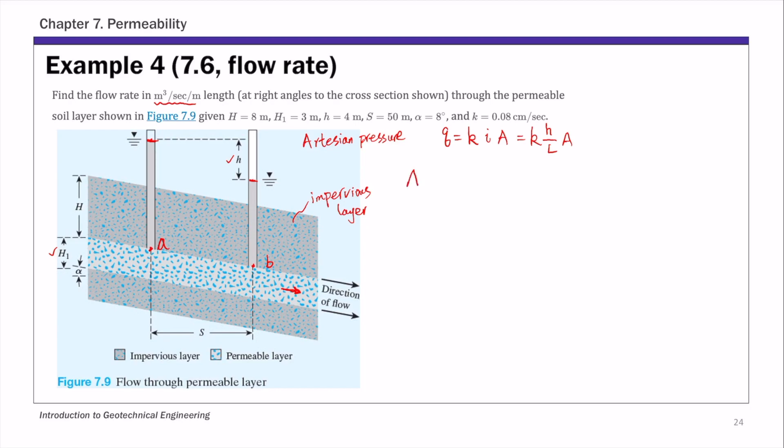So for this example, this A, cross-sectional area perpendicular to flow. This is very similar to the previous example. So we need to find the direction perpendicular to the flow, the cross-sectional area perpendicular to flow. So that's the flow. And this area here, this is capital A. So that's the cross-sectional area perpendicular to flow. And this angle here is alpha. So capital A is H1 times cosine alpha.